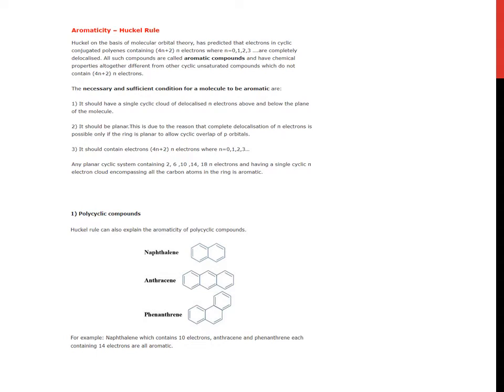Here are some examples: naphthalene, anthracene, phenanthrene. For example, naphthalene contains 10 electrons. Anthracene and phenanthrene each containing 14 electrons, all are aromatic.